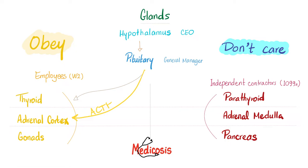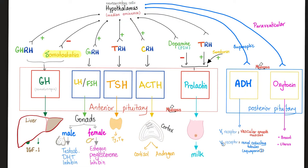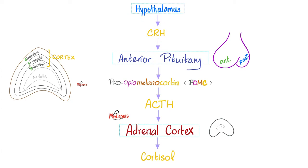How does the pituitary influence the adrenal cortex? Via ACTH — adrenocorticotropic hormone. The hypothalamus secretes CRH, corticotropin-releasing hormone, which goes to the anterior pituitary and tells it to make ACTH. ACTH goes to the adrenal cortex and tells the zona fasciculata to make cortisol. So: hypothalamus makes CRH → anterior pituitary makes ACTH → adrenal cortex makes cortisol.